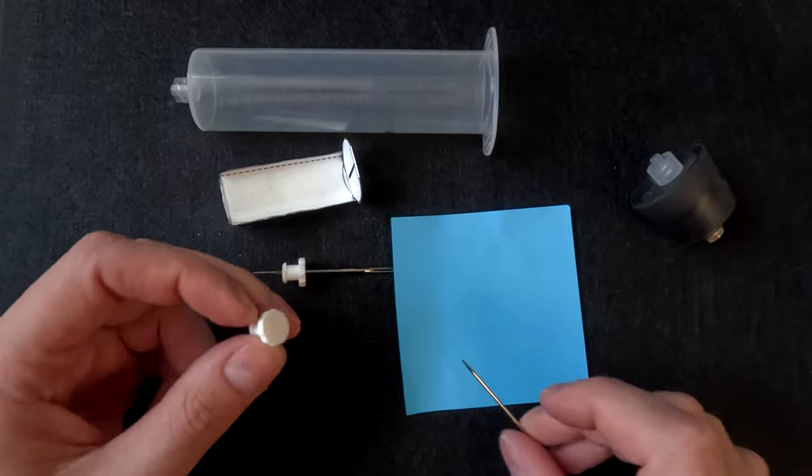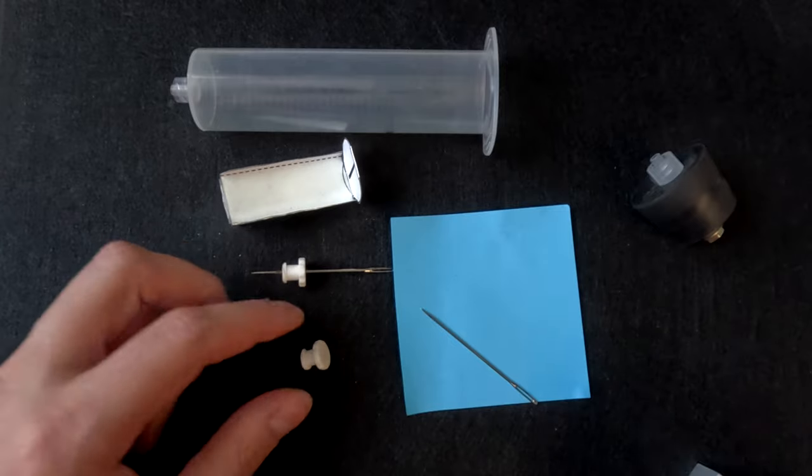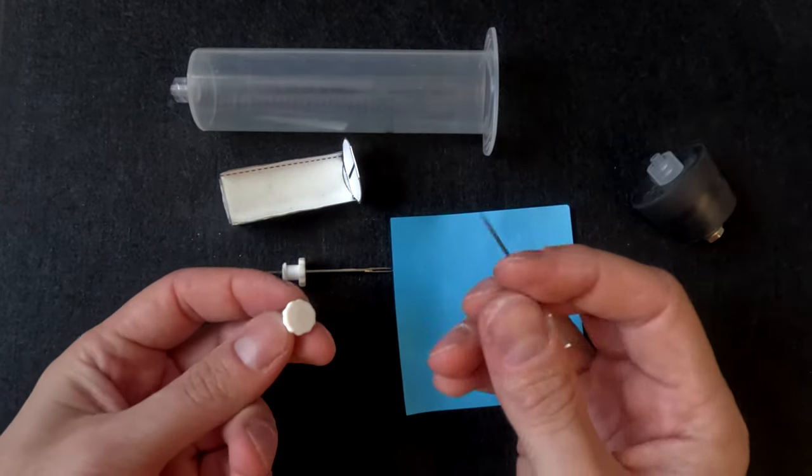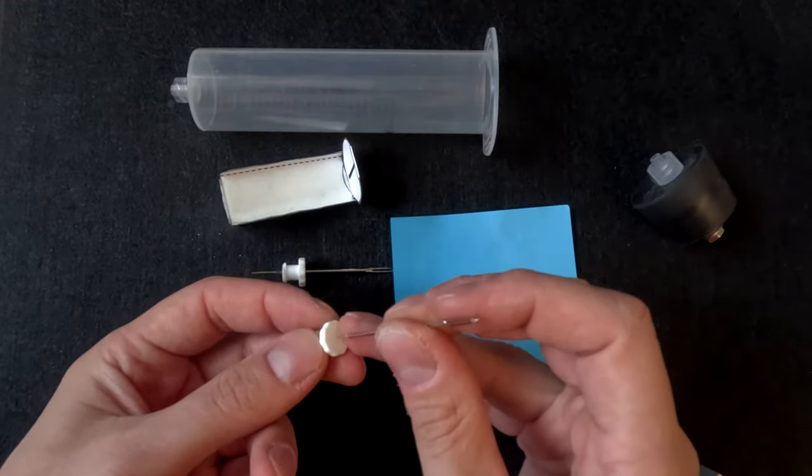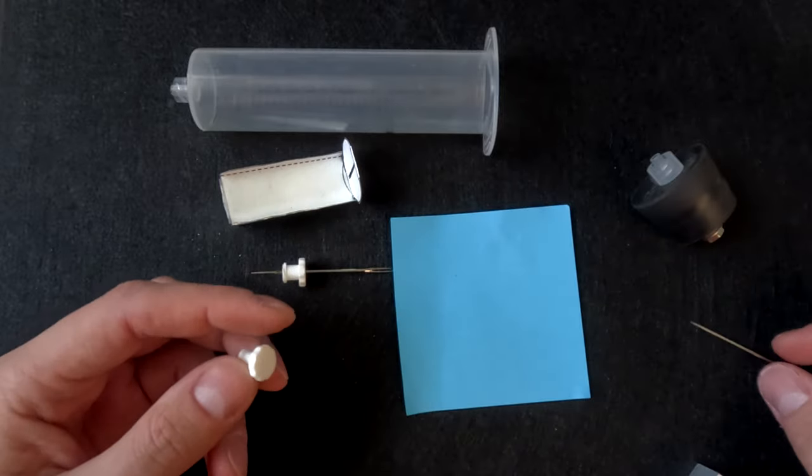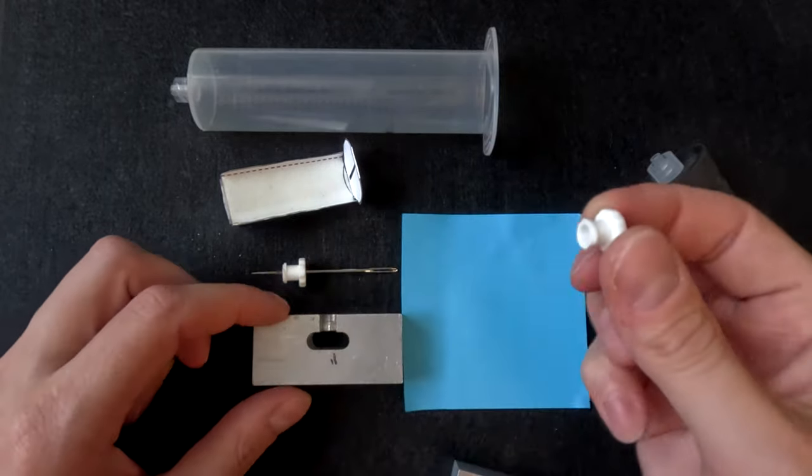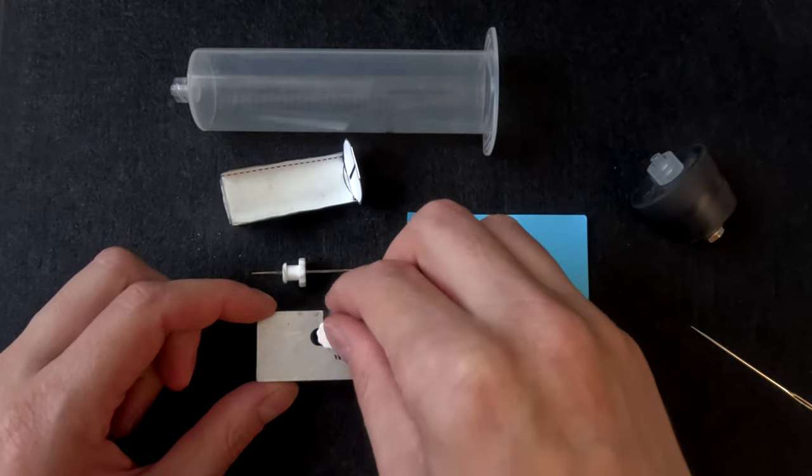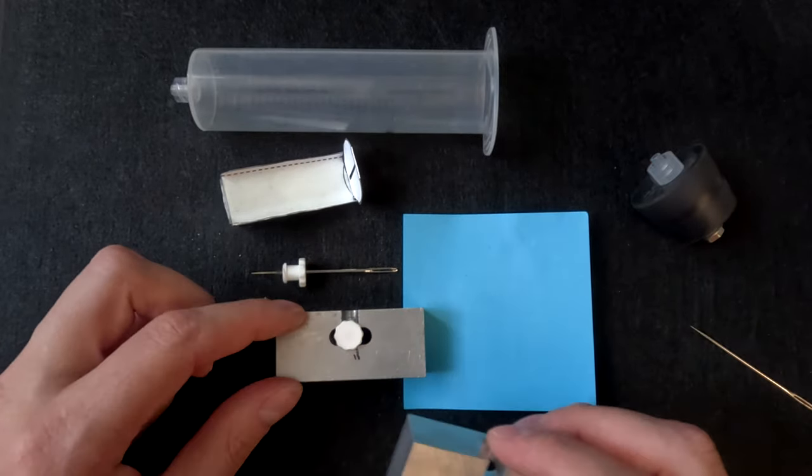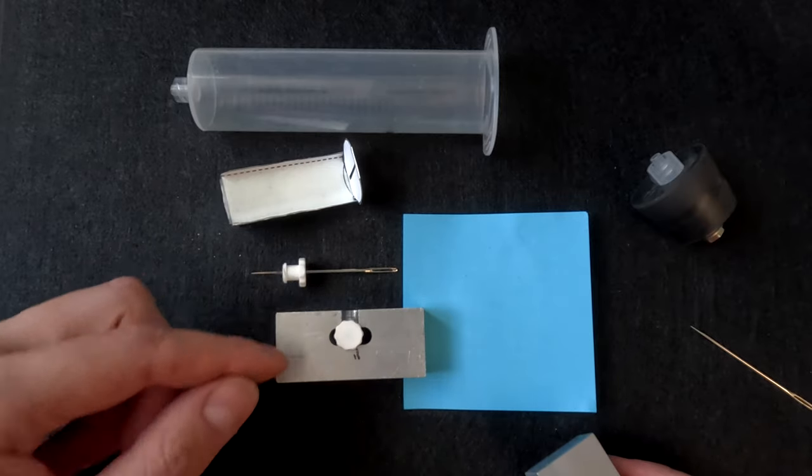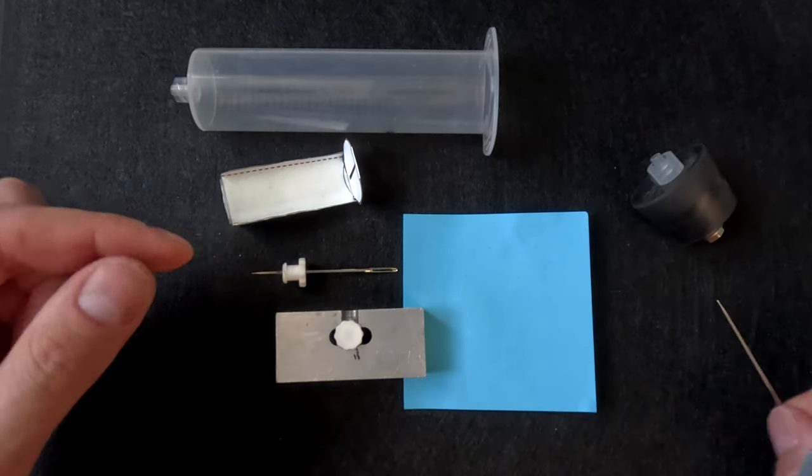Your needle assembly is constructed by taking the sewing needle and pushing it through the end of the nylon cap. This should be done carefully by placing the nylon cap on a hard solid surface, shown here with an aluminum block as an example.